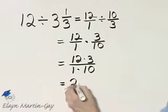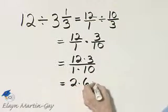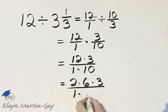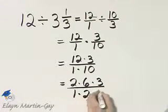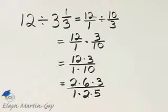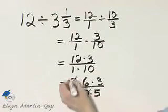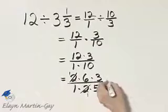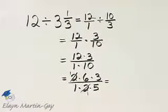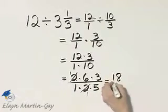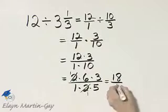12 as 2 times 6, and then times 3 over 1 times—I'll write 10 as 2 times 5. You can now see that common factor which we'll divide out, and we have 1 times 6 times 3, that's 18, over 1 times 1 times 5.